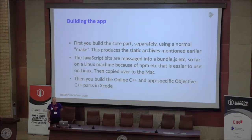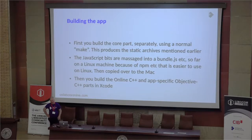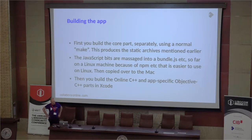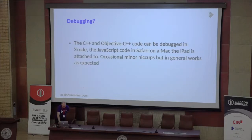When you build the app, it's several steps. First, you build the core repository parts, which produces the static archives. When I build the JavaScript bits, I do it on a Linux machine, because I didn't want to install NPM and other things on my Mac without knowing how much they will disturb my other stuff or possibly corrupt my environment. So I do that on a Linux machine, but it could be done on the Mac also. This generates one bundle.js that is then copied over to the Mac.